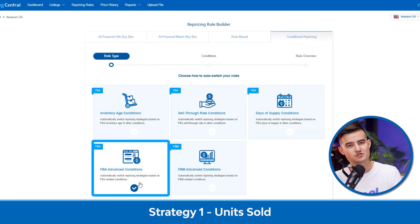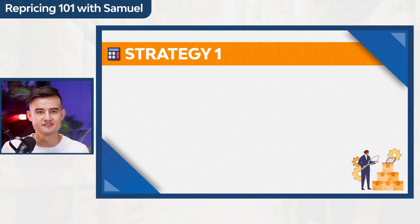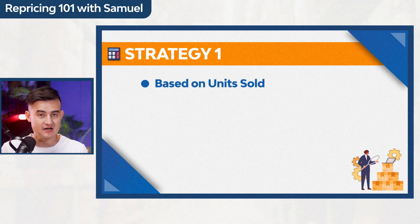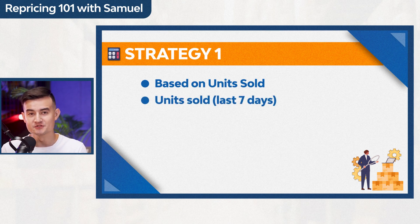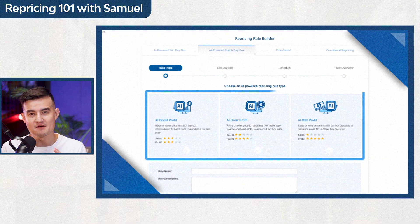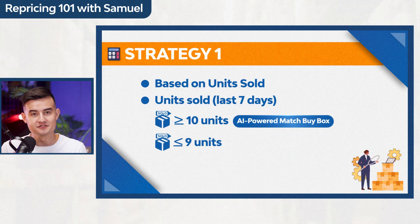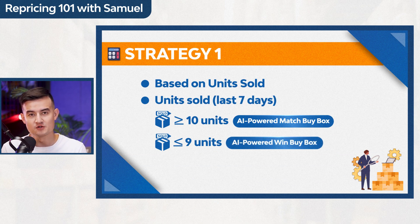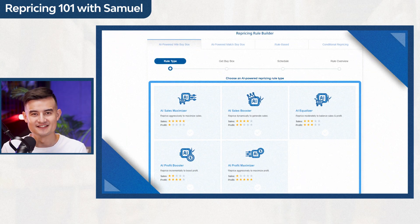Let's see what kind of new strategies we have prepared. The first conditional repricing strategy is based on units sold. It's a very simple strategy where you're going to have two different scenarios based on the number of items that you sold in the last seven days. If it's higher than a certain amount, BeCool will use the AI match buy box rule, and if it's below the desirable amount, our repricer will use a more aggressive rule from AI buy box wins.